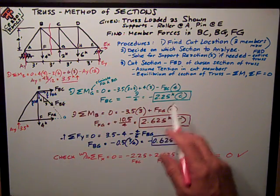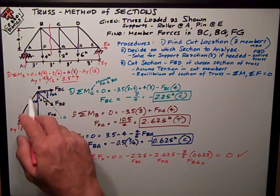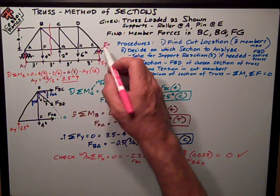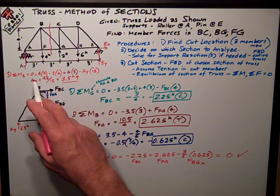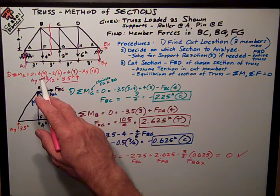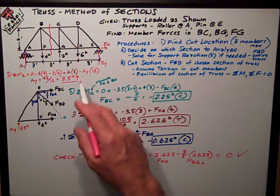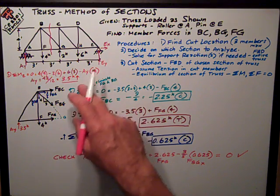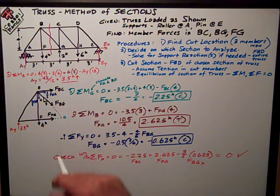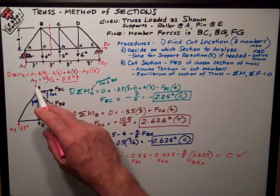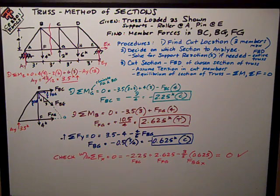Cut our section. And first part, let's look at the reactions. The reaction at A, sum in moments about E. So here's the equation. Sum of the moments about E is zero. We have these loads, four, two, and six, and their distance to point E. And then balanced by the support at A and its distance to E, which is 12 feet. Do all the math. We get that AY is 3.5 kips up, just like we assumed it.